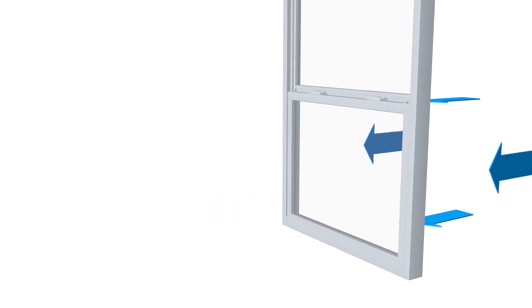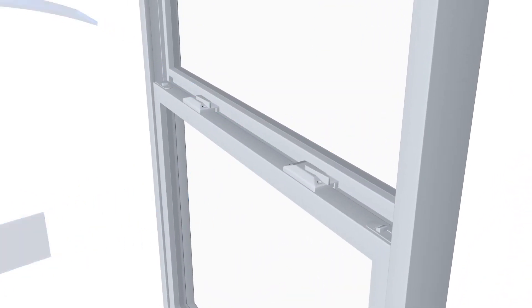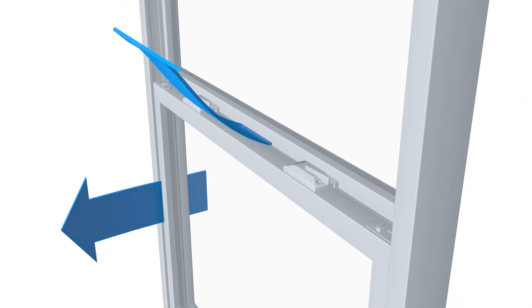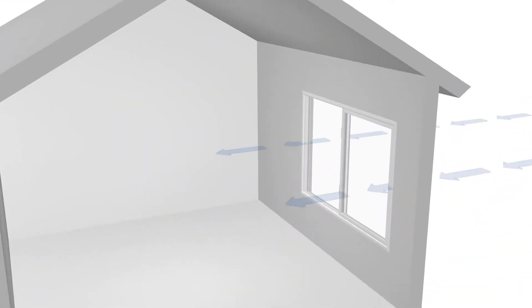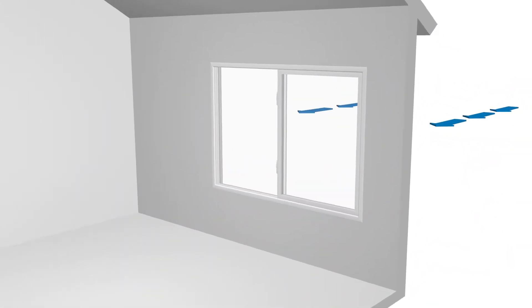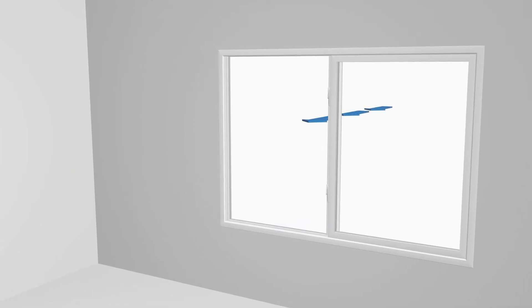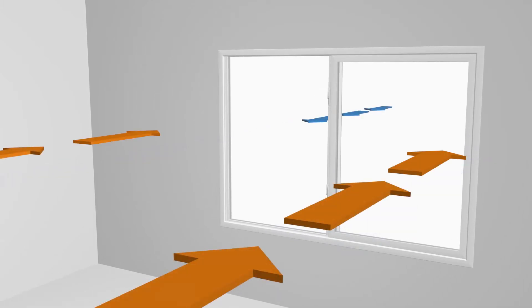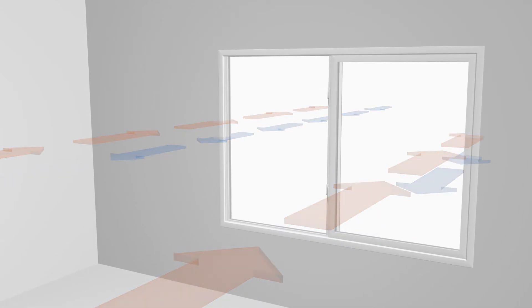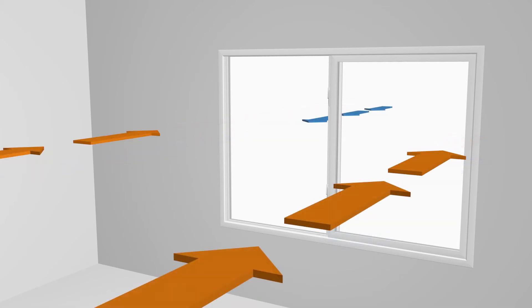Differences in pressure can cause air to travel through small gaps between the sash and frame. Air can travel into and out of the windows, which will cause a room to exchange the inside air with the outside air. The more air exchanges you have, the more times your heating and cooling system have to recondition the air in the room — meaning less energy efficiency and higher energy bills.